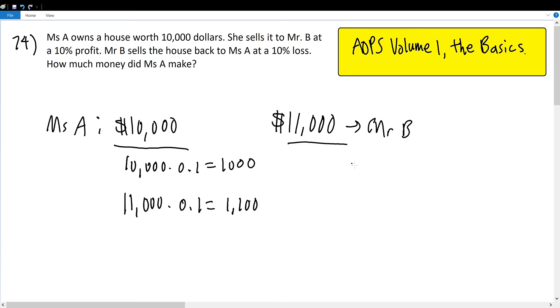Well, that is just $11,000 times 0.1, which is the same thing as $1,100. Mr. B sold it at $11,000 minus $1,100, because he had to lose this much money from selling the house, and this will be equal to $9,900.